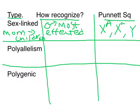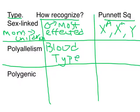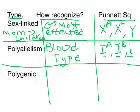The next one is polyallelism, and the way you're going to recognize this is it's blood type — human blood type. That's the only way this will ever show up on the EOC, and it's the only example you were given. With this, remember the allele is I, and I has an IA form, IB, and then there's a little i. You have a combination of two of those three alleles making up blood type.